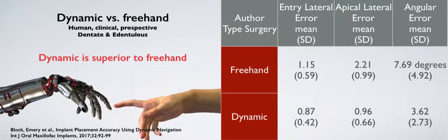This was the first human trial to compare dynamic navigation to freehand. This is a high level of evidence. This was done by Dr. Block et al. It's a human clinical prospective trial. And this trial included both dentate and edentulous. And what do we see? Dynamic navigation is superior in every measure to freehand.